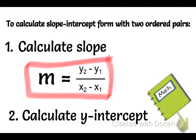Once we have the slope, we can repeat our work from yesterday and we can calculate the y-intercept with one of the ordered pairs.